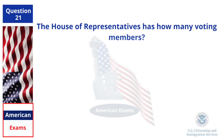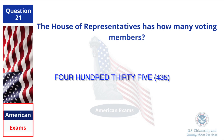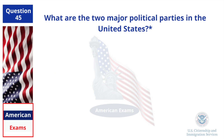The House of Representatives has how many voting members? 435.